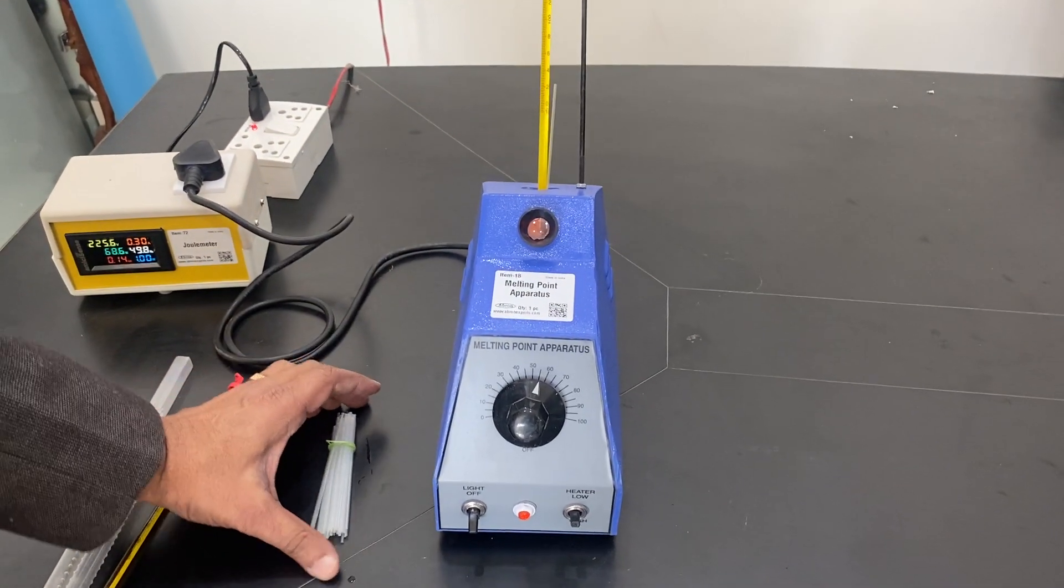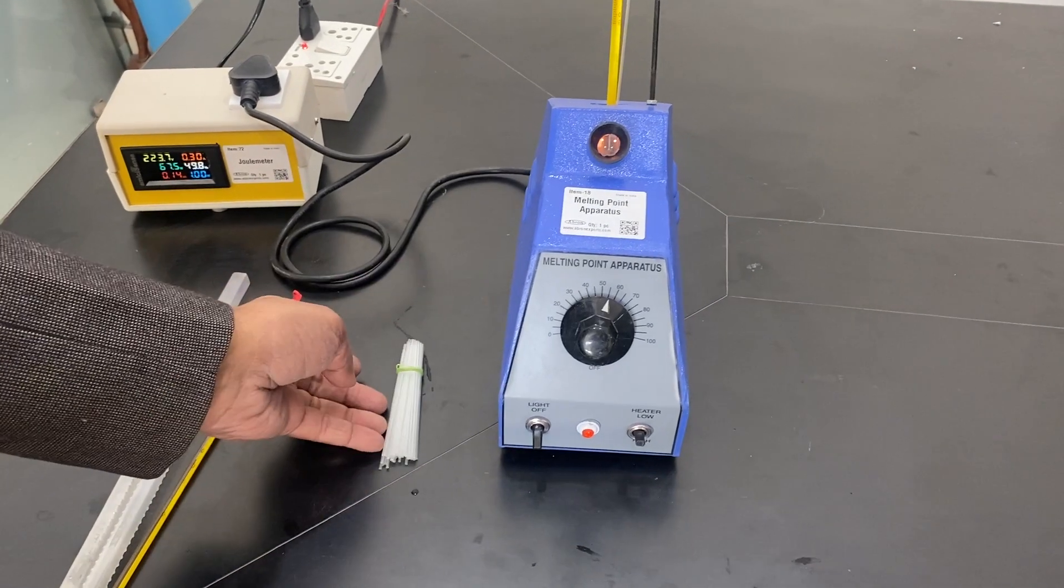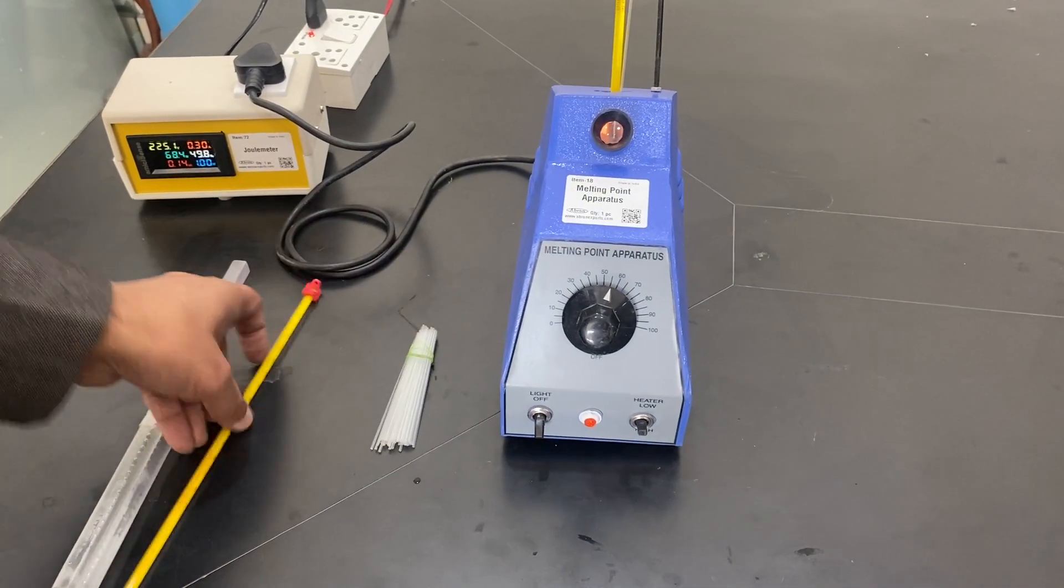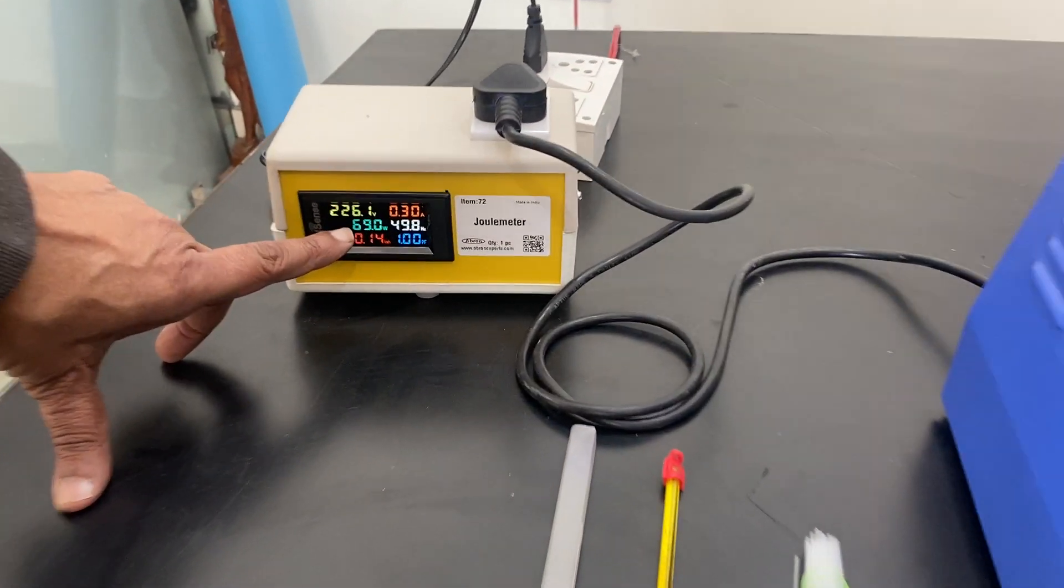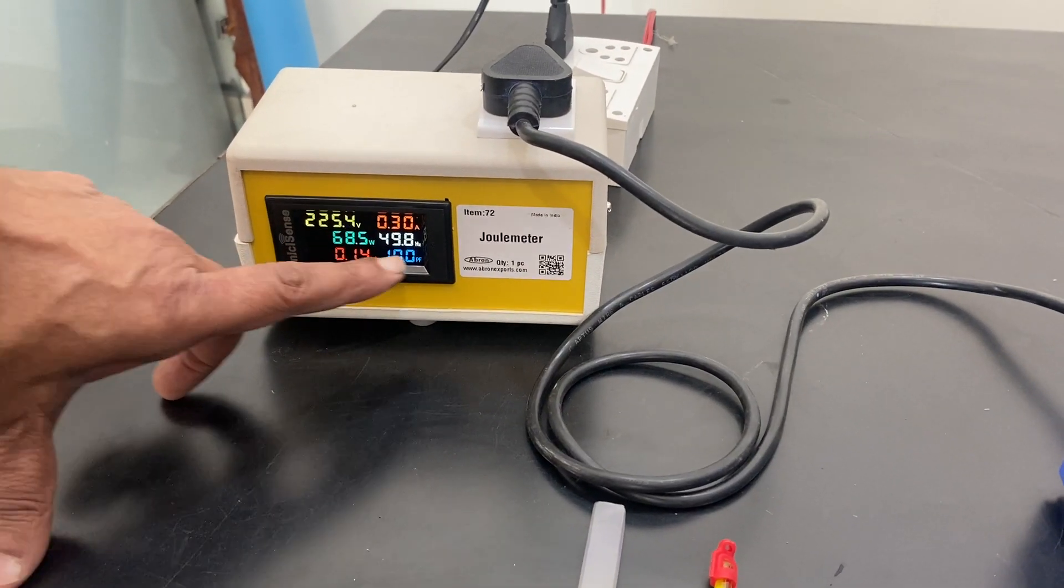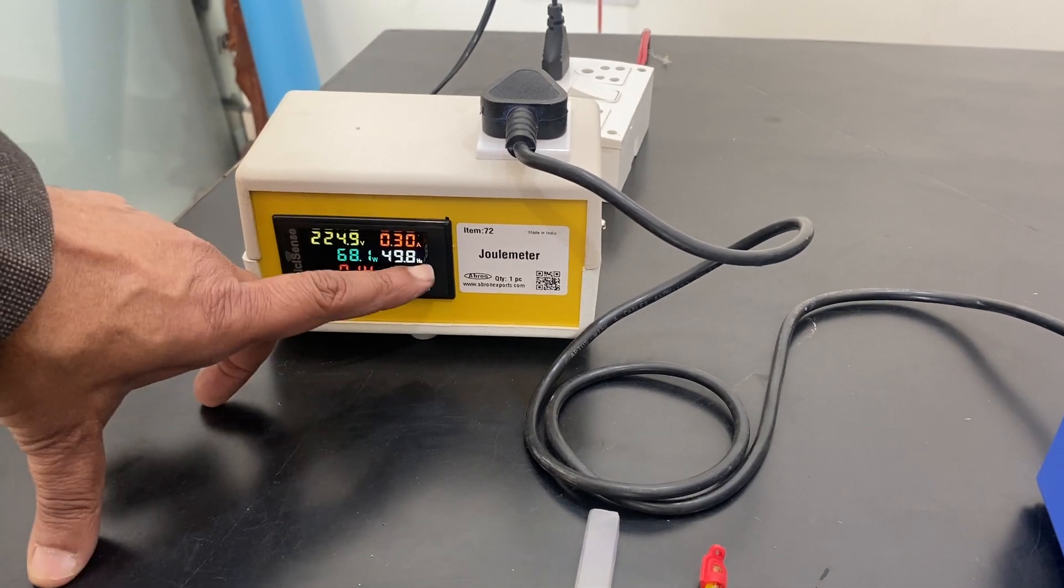We generally provide the capillaries, but it's not a part of the instrument. We generally give you 10-20 capillaries. Thermometers are also optionally available. It gives 70 watts, the heating capacity of the heater.